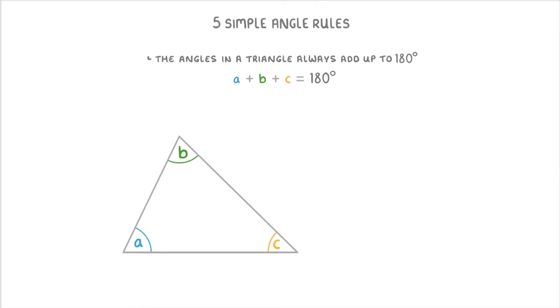The main place you'll have to use this rule is when they give you two of the angles and ask you to work out the third. For example in a question like this. Here they've given us two of the angles, 65 degrees and 45 degrees, and asked us to work out the missing angle x.